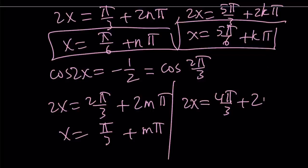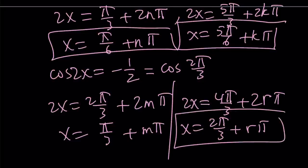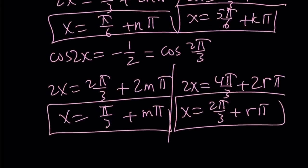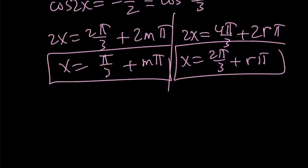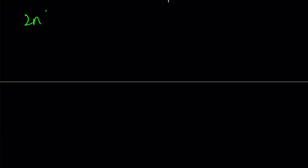2r pi and then x is going to be 2 pi over 3 plus r pi. So it basically gives us the solution sets. Okay, great. So let's go ahead and take a look at the second method and see how we can compare those. And I'm also going to be showing you the graph of it so you'll see the solutions all together. So with the second method, I'm just going to make a common denominator. I don't care about the double angle.